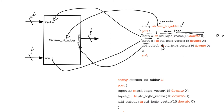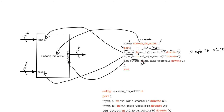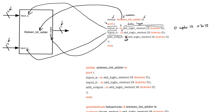The entity doesn't actually describe how it is implemented on the inside, and it doesn't indicate how many times this entity is used. The entity just indicates the existence of the design. We are just declaring that it exists and describing the black box in terms of input and output ports and the sizes of such ports.